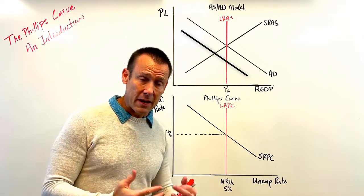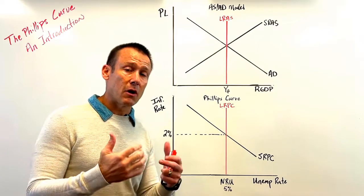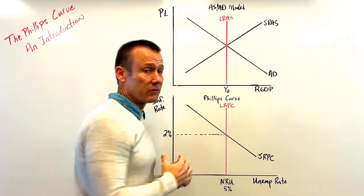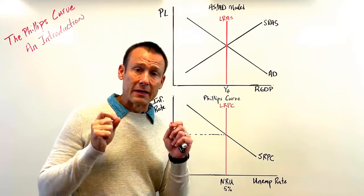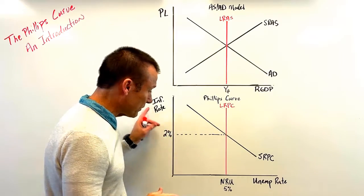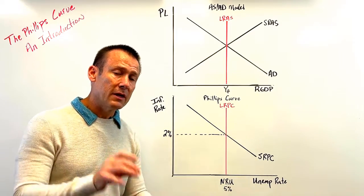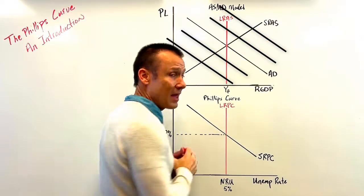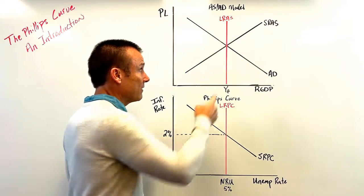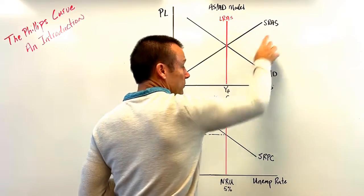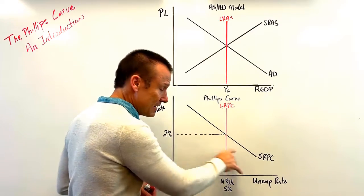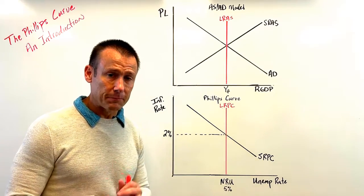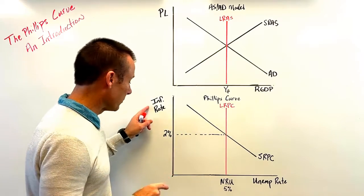If AD shifts to the left, the inflation rate tends to come down — the AS-AD model says the price level goes down, which is deflation, but often we just get disinflation. When total spending decreases, the unemployment rate goes up again, confirming the inverse relationship. Since AD is unstable and shifting along a fairly stable SRAS — the short-run aggregate supply — we get that inverse short-run relationship, giving us the downward-sloping SRPC.